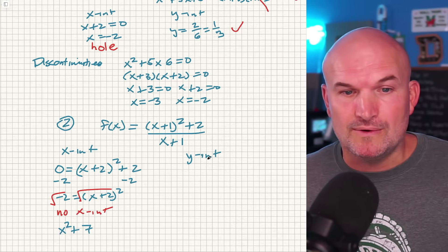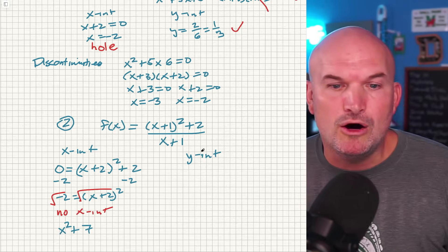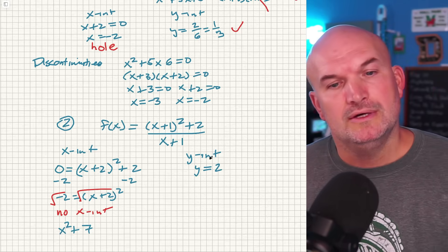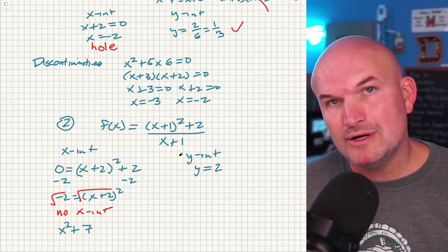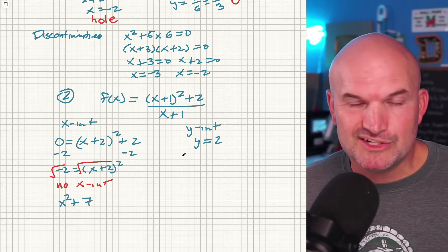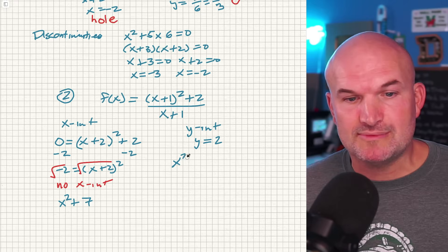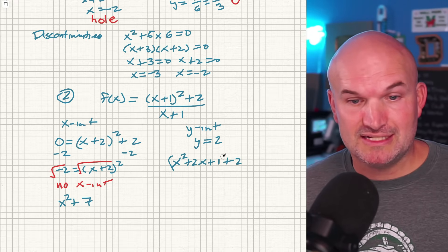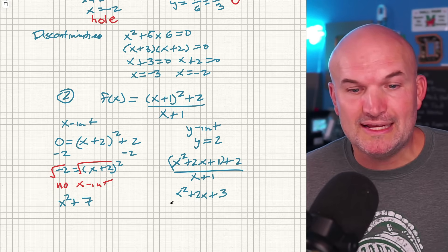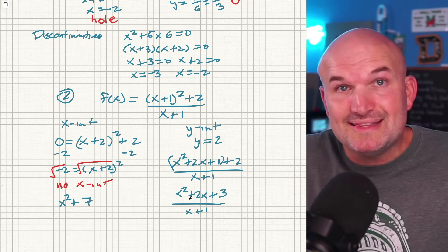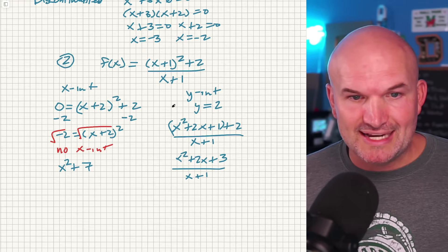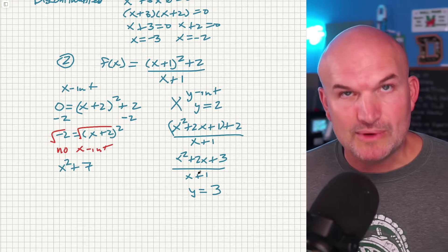To find the y-intercept, a lot of students say — I'll just take constant over constant, so y equals 2 over 1, which is 2. But remember, the y-intercept is when x equals zero. If you expand (x+1)²+2, you get x²+2x+3 all over (x+1). So the y-intercept is not y equals 2 — that is incorrect. The correct y-intercept is y equals 3.